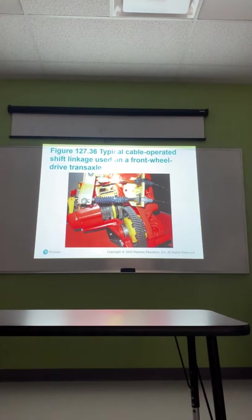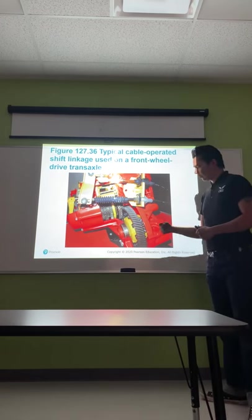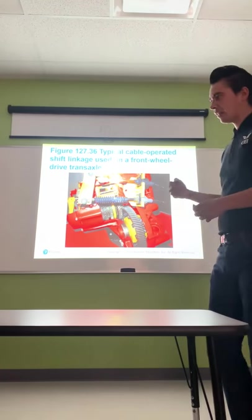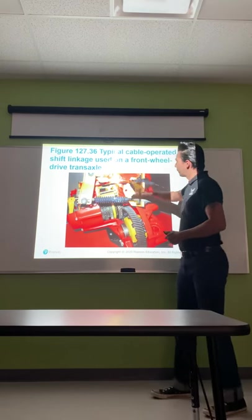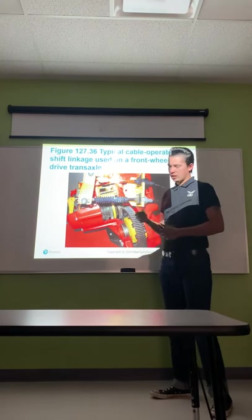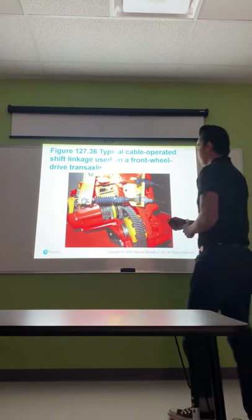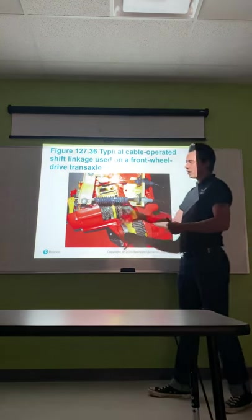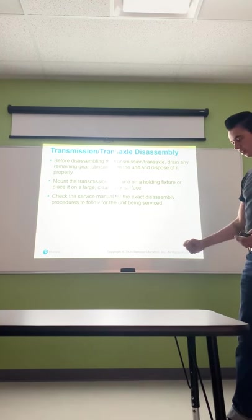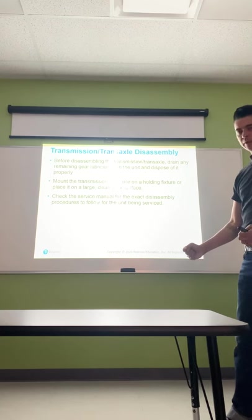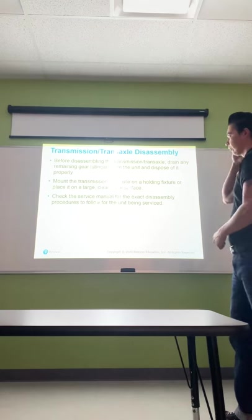Typical cable-operated shift linkage on a front-wheel drive transaxle uses a push-pull method — it pushes one fork and pulls on the other, moving the forks in different ways. For rear-wheel drive transmissions, the shifter typically comes directly through the top of the transmission, though cable linkages are also used on some rear-wheel drive vehicles.